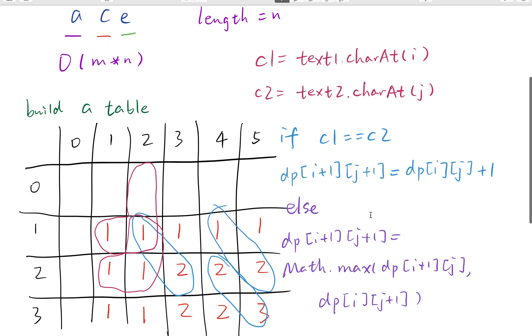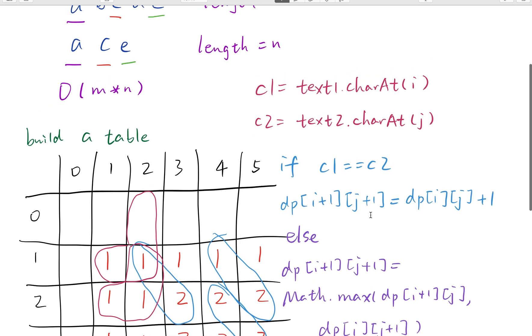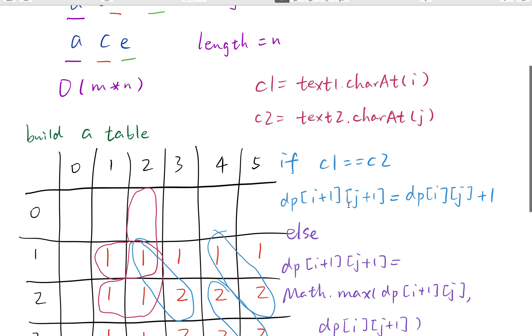So to wrap up, we iterate the two strings using two for loops. And we keep comparing the current two characters.